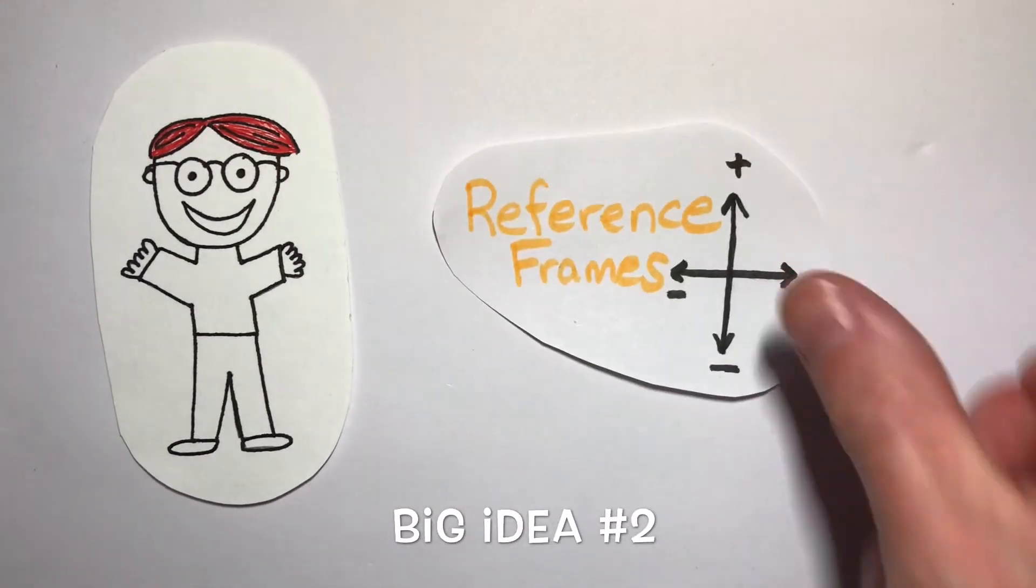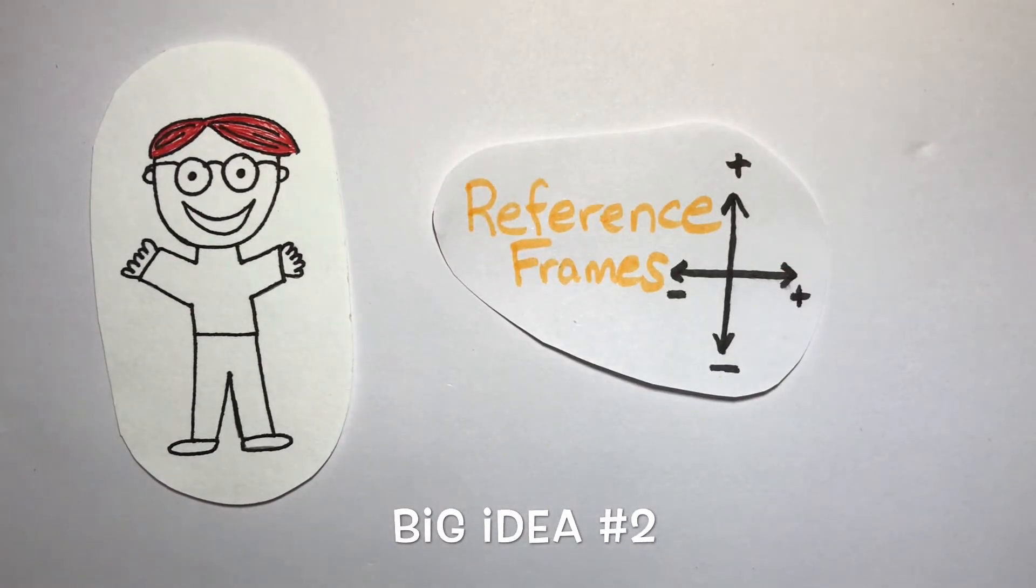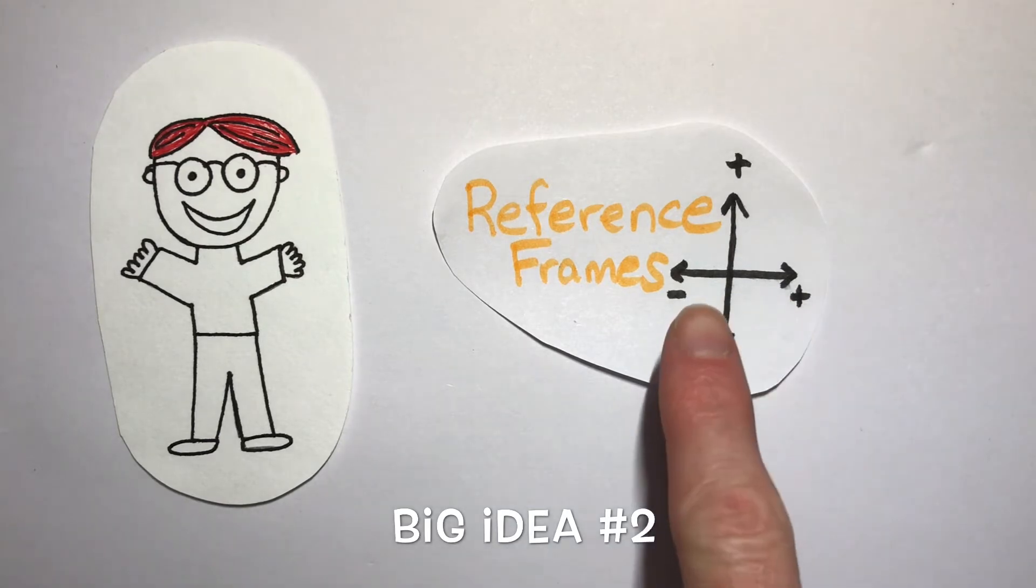Big idea number two is all about reference frames. A reference frame is a convenient tool to help us figure out which directions are going to be positive and negative. For a reference frame, it's important to decide where positive is going to be in the vertical dimension and horizontal dimension.